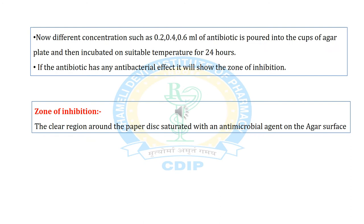Different concentrations — such as 0.2, 0.4, and 0.6 ml — of antibiotics are poured into the cups of the agar plates, which are then incubated at a suitable temperature for 24 hours. If the antibiotic has any antibacterial effect, it will show a zone of inhibition.